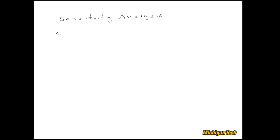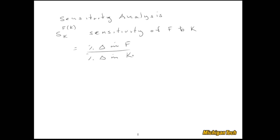Here's our notation. Let's say we want to look at the sensitivity of some function f that is a function of a parameter k. We'll denote it with capital S, the actual value of the sensitivity we're going to calculate. This is the sensitivity of f to k — it's the percent change in f over the percent change in k. Mathematically, it's df/dk times k over f.